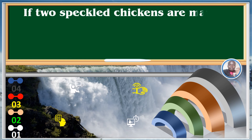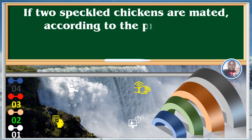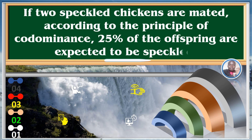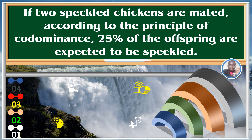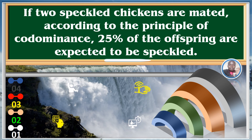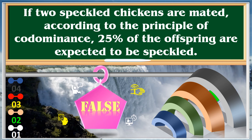If two piebald chickens are mated according to the principle of codominance, 25% of the offspring are expected to be piebald. False.